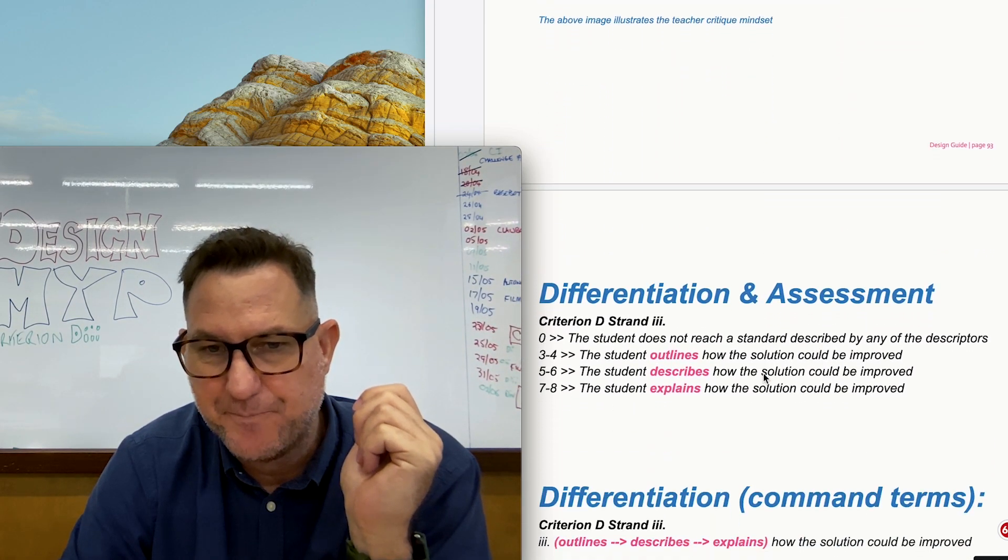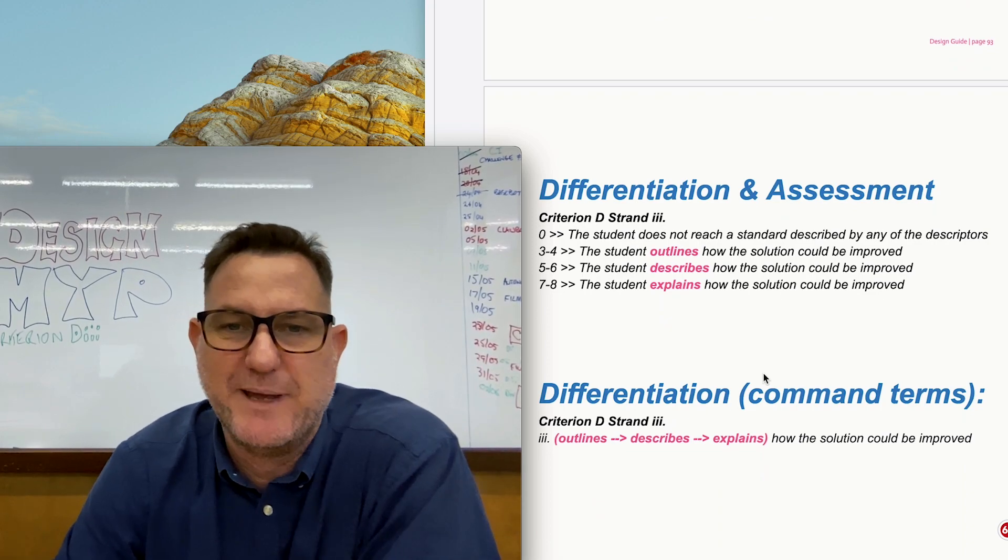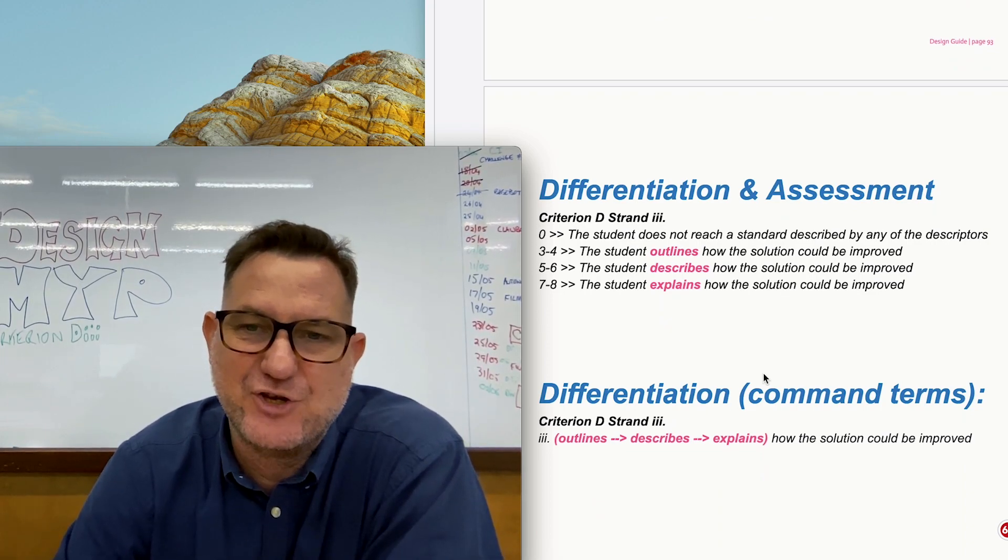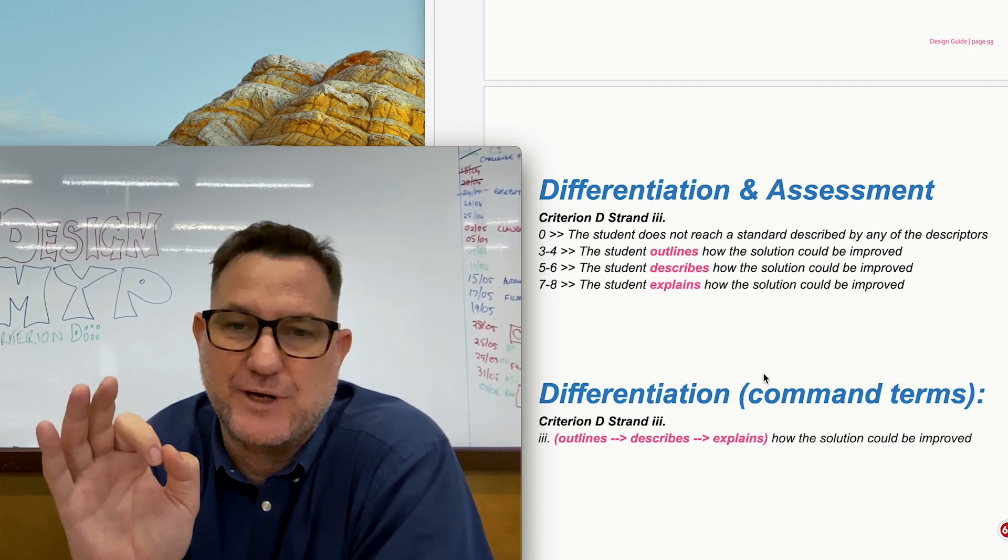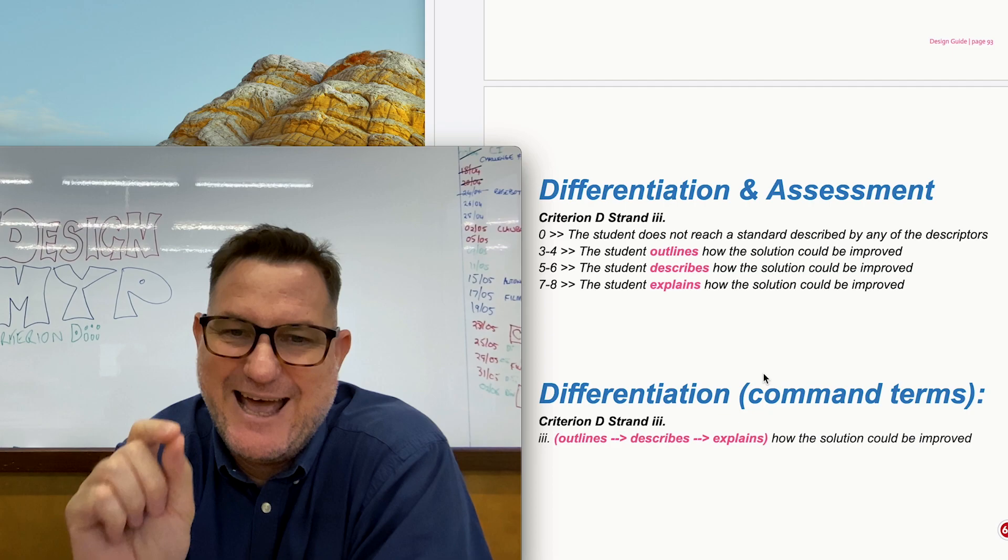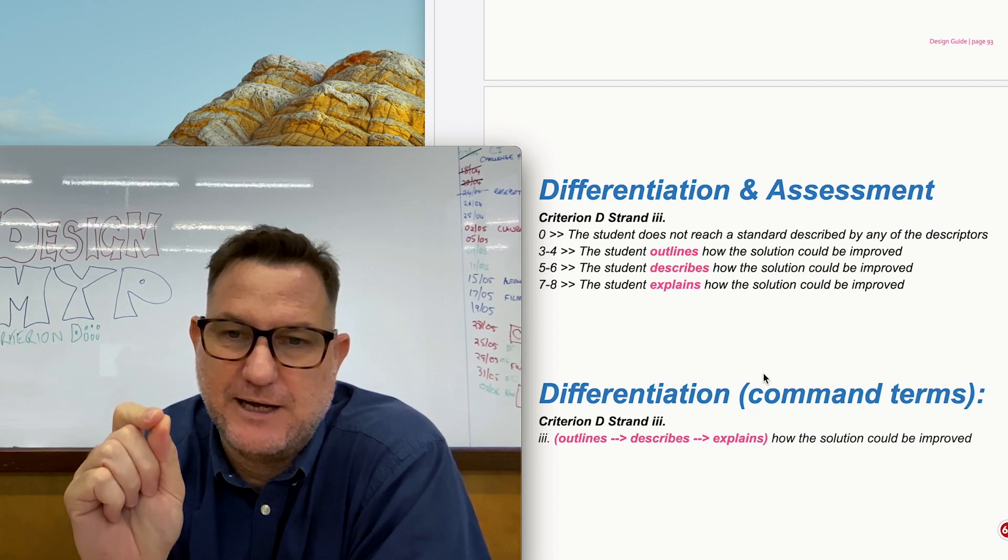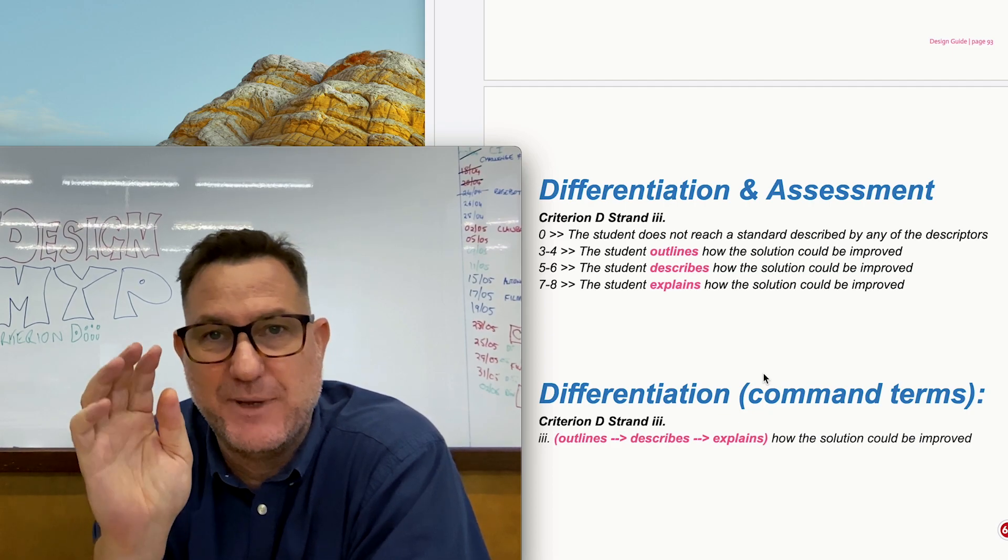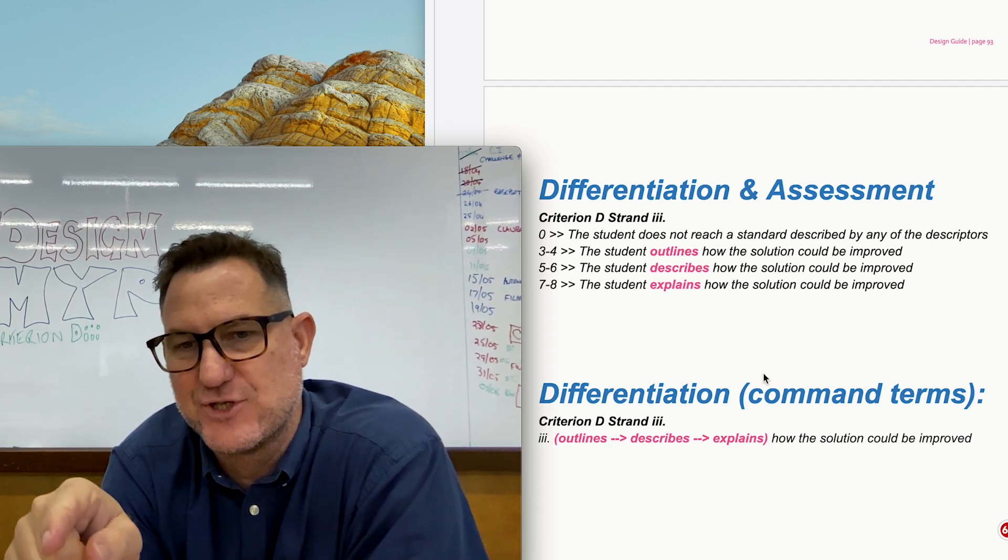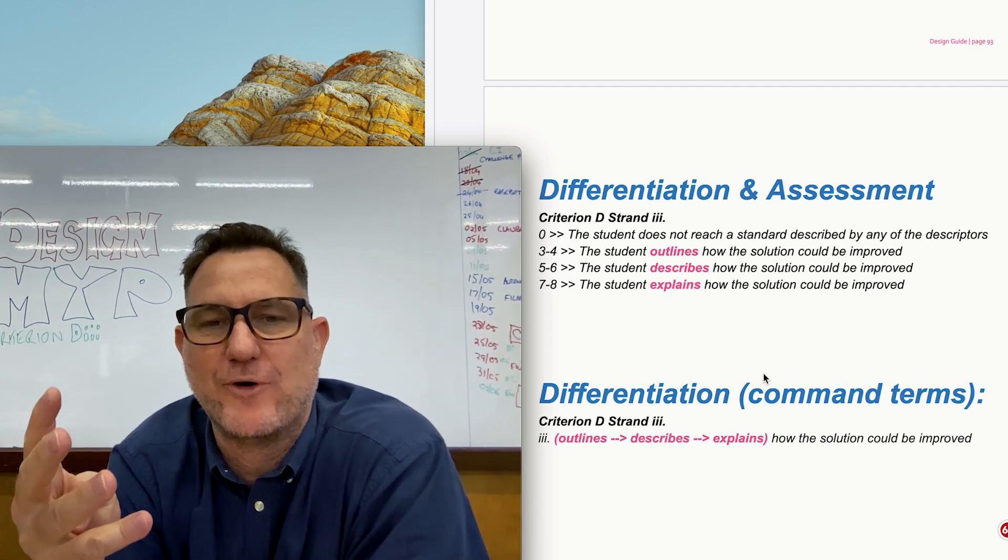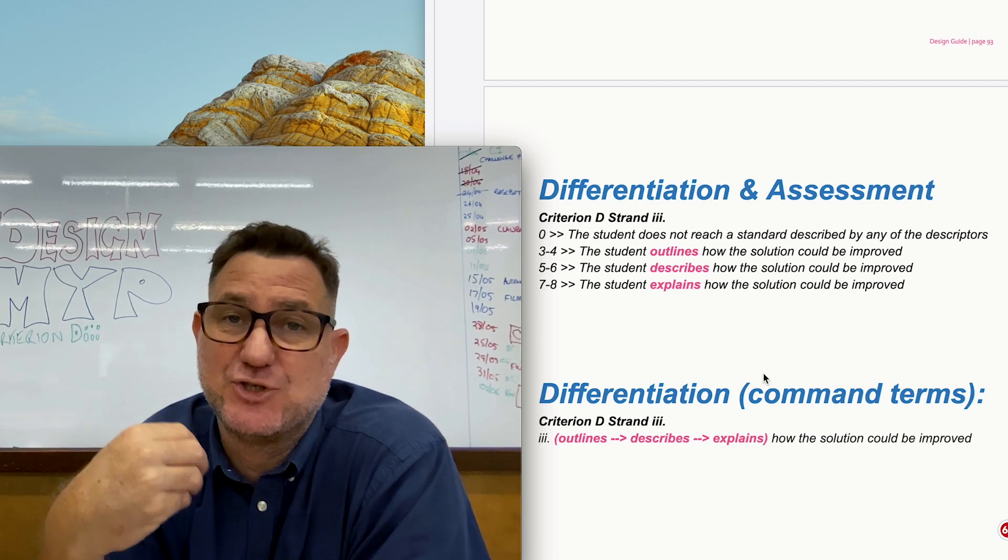Now I'm gonna finish here with the talk about the assessment criteria and the differentiation. So first of all when you produce your work for strand 3, if you outline, just doing an outline, so it means you've started with your list but then you start to outline how the solution could be improved you'll get 4 out of 8. But if you actually describe,